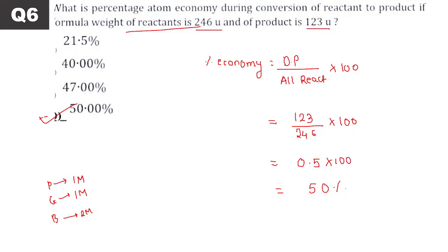Let's not waste more time. Elements of group 16 — one shot first on group 16. Who is the father of green chemistry? Paul T. Anastas.